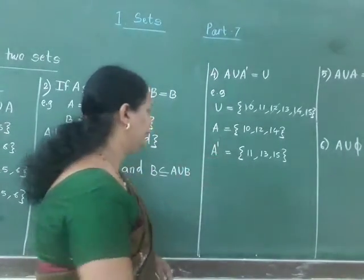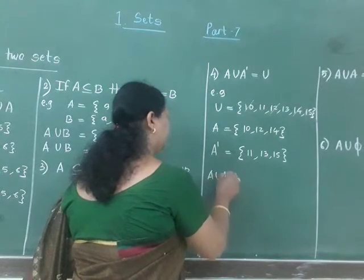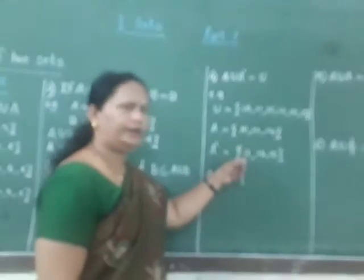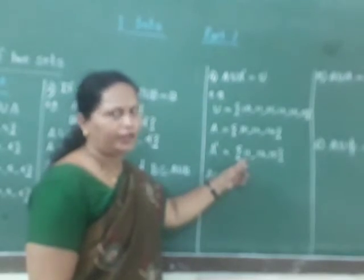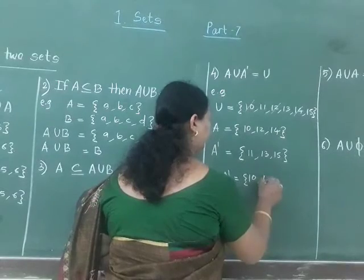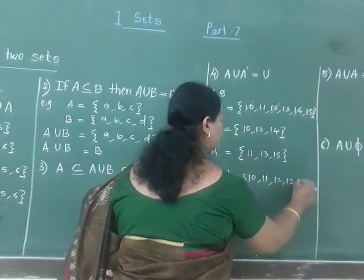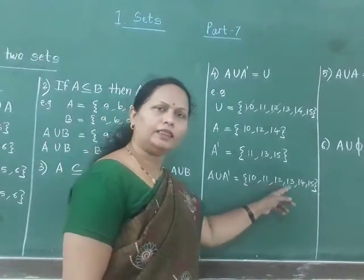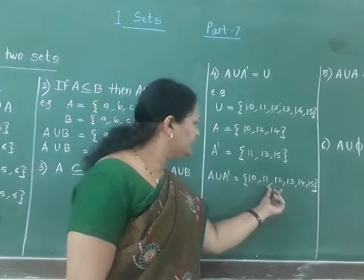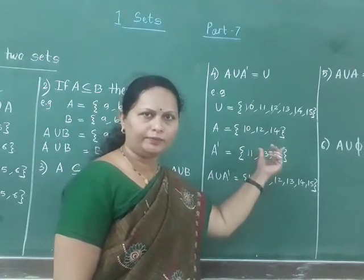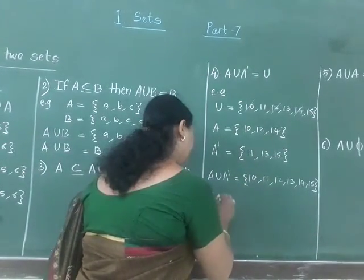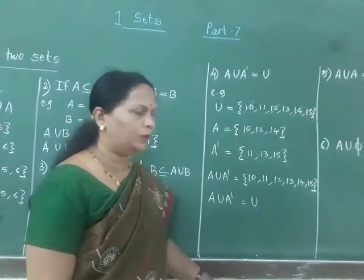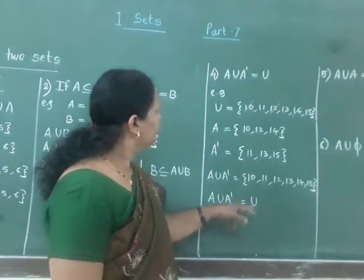Now find out A union A dash. A union A dash will give us 10, 11, 12, 13, 14 and 15. So we get A union A dash equals 10, 11, 12, 13, 14 and 15, which is the universal set. Therefore, here we get A union A dash is equal to the universal set. So this is the fourth property.